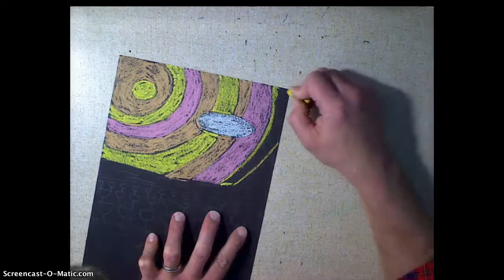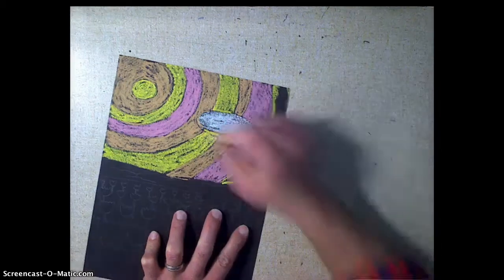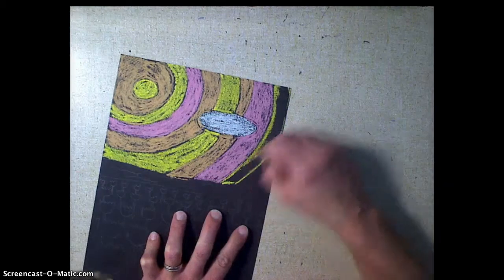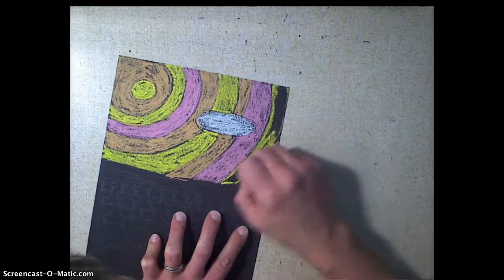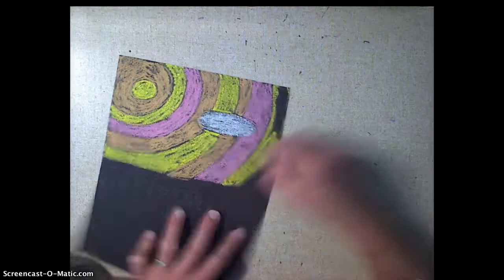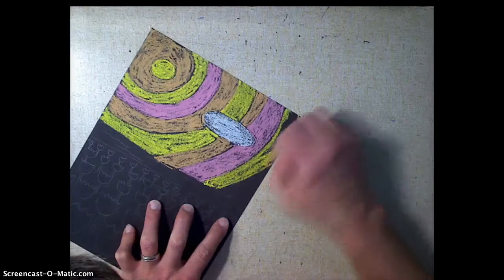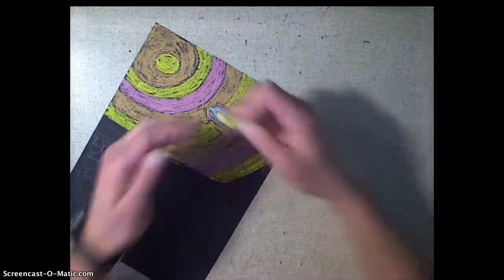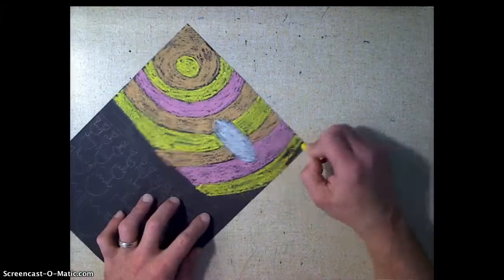And guys, when you're coloring, you're trying to make it look like the sun, the rays. So I'm going in the direction of the sunbeam rays that would be coming out from it.